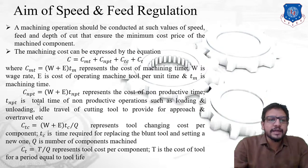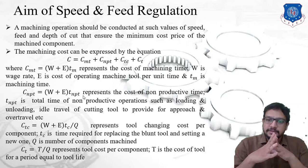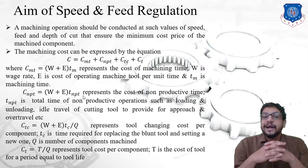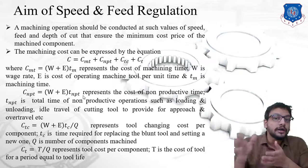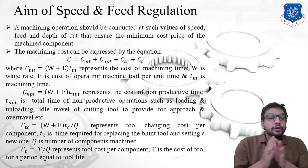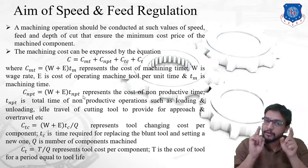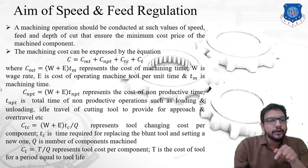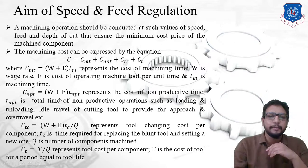Similarly, the cost of non-productive time, Cnpt, equals (W + E) × Tnpt. Non-productive time includes loading and unloading of a workpiece, loading and unloading of a cutting tool, idle travel of the cutting tool for approach and over-travel, and travel of the cutting tool before and after the commencement of a cut. During this period no machining operation is performed, yet the machine runs at a definite speed consuming power, and we are still paying the worker.